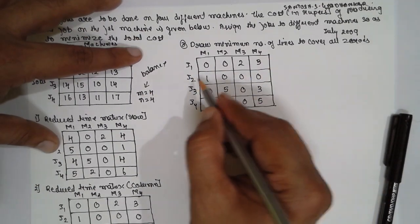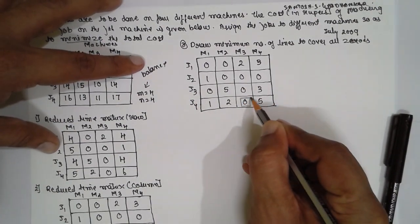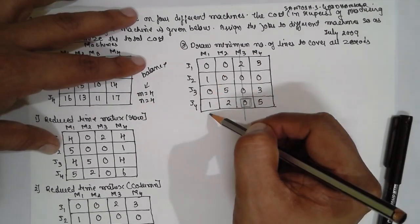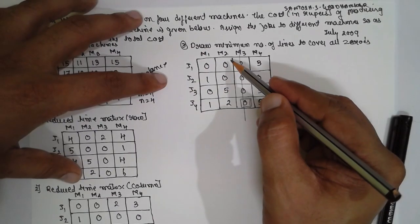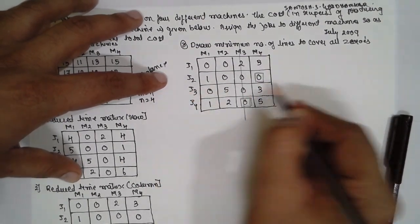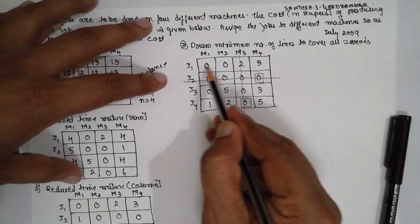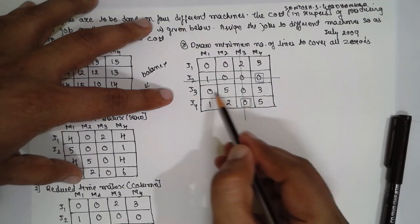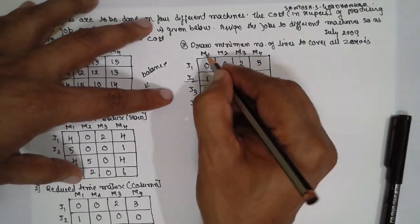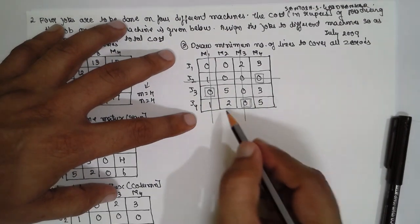For assignment, first check row-wise: Row 1 has two zeros — not possible. Row 2 has three zeros — not possible. Row 3 has two zeros — not possible. Then check column-wise: Column 1 has two zeros — not possible. Column 2 has a single zero — assign it, then eliminate that row. Going back row-wise, find a single zero — assign it and eliminate the corresponding column. Continue column-wise; single zero found — assign it and eliminate the row.